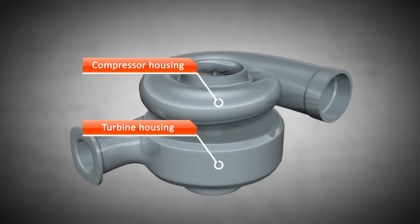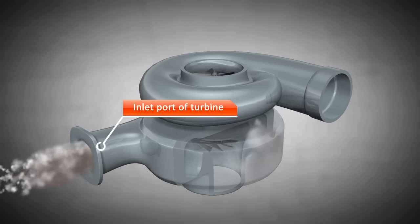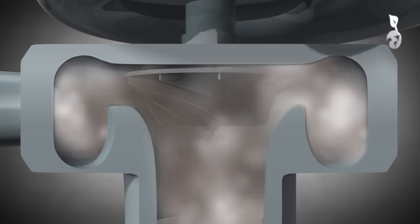The exhaust gas produced by the engine enters the turbine housing through the inlet port. At that point, thermal energy is converted into kinetic energy because of the constriction in the turbine. Consequently, the turbine is driven by kinetic energy.